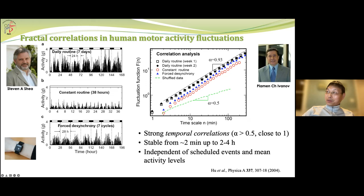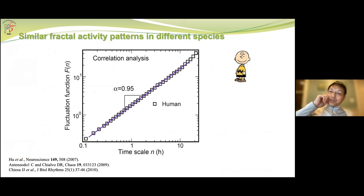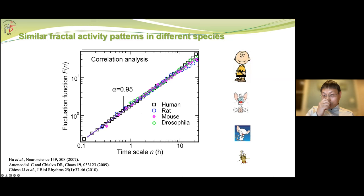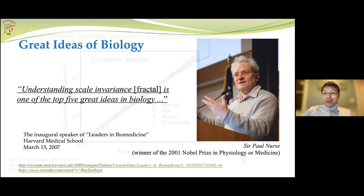After many years, we showed similar fractal activity patterns in rats, mice, and Drosophila, indicated by similar scaling slopes — though with some subtle differences depending on recording resolution. Overall, this appears to be a universal, common feature across species.